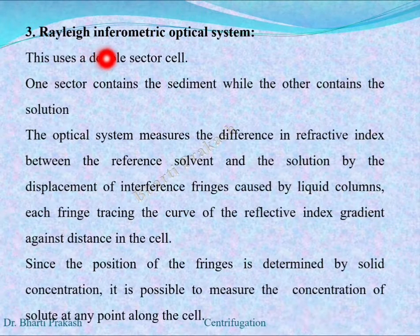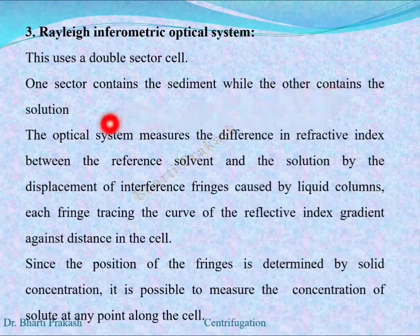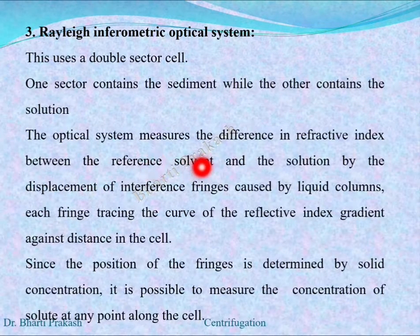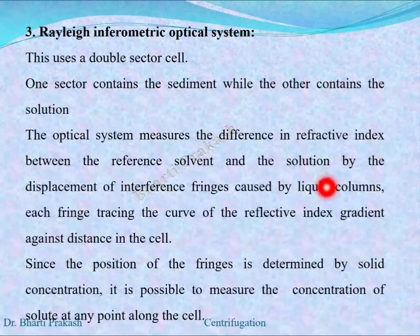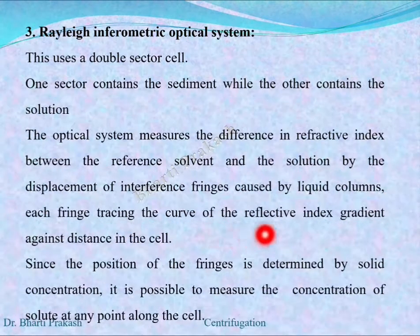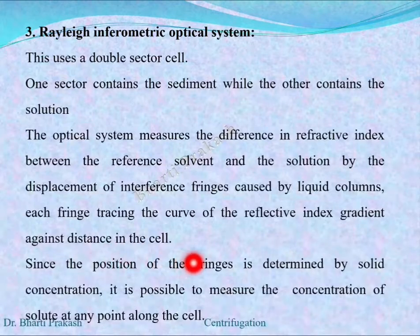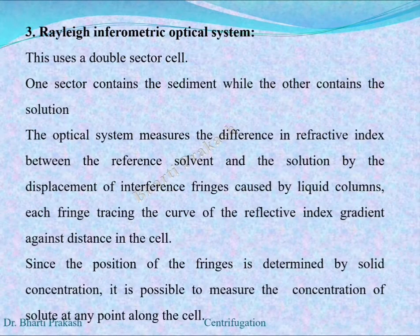The relay interferometric optical system uses a double sector cell — one sector contains the sediment while the other contains the solution. The optical system measures the difference in the refractive index between the reference solvent and the solution by the displacement of interference fringes caused by liquid columns. Each fringe traces the curve of the refractive index gradient against distance in the cell. Since the position of the fringes is determined by the solute concentration, it is possible to measure the concentration of solute at any point along the cell.